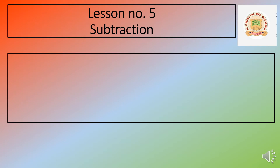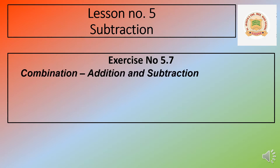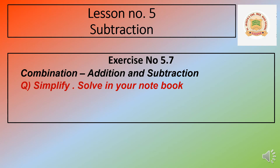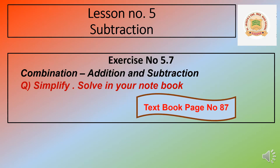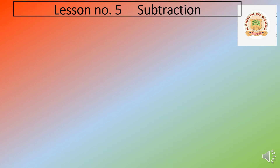Today we are going to learn a totally new concept: the combination of addition and subtraction, exercise number 5.7. That is the last exercise of lesson number five. In this exercise, we will get both addition and subtraction in the same question. This question is in your textbook on page number 87.